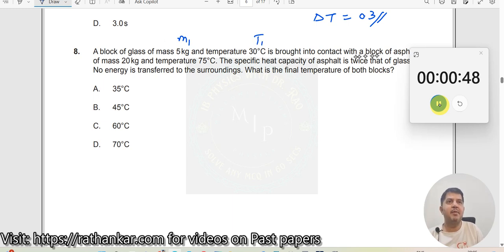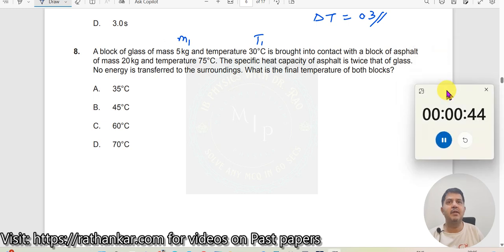Temperature T1, is brought into contact with the block of asphalt of mass M2, temperature T2. This temperature T2 is greater than T1.